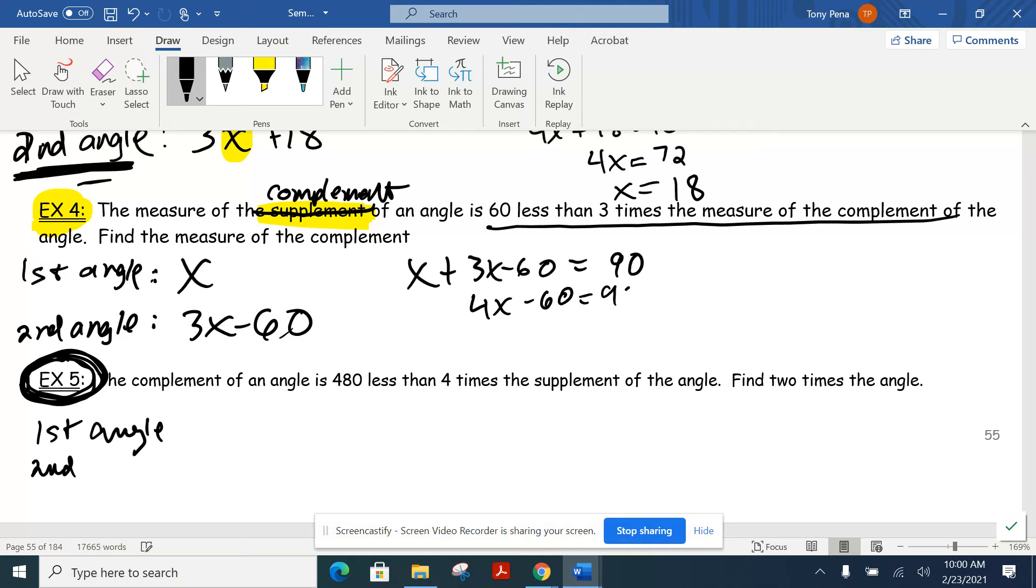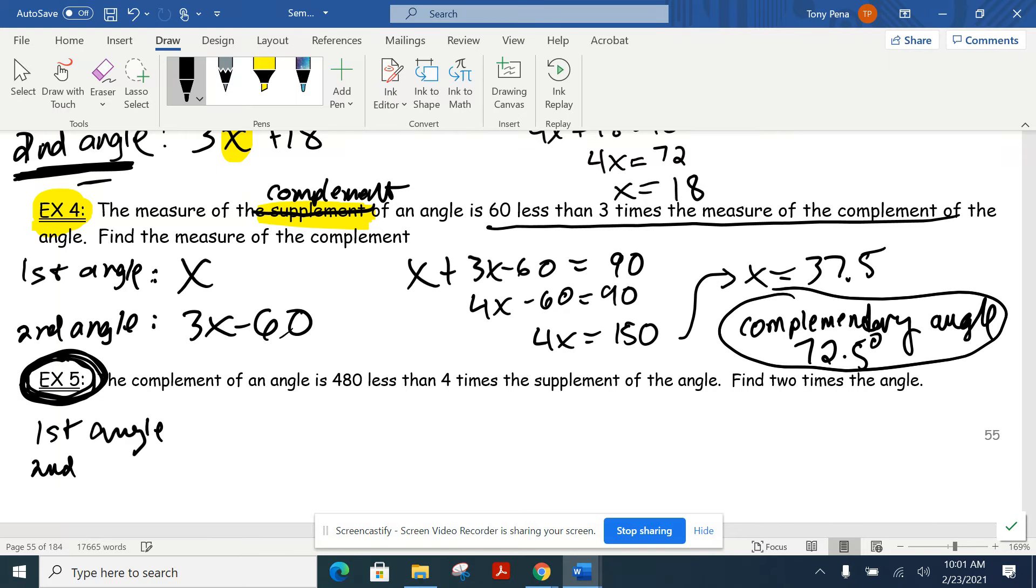Since we're looking for complements, we're going to add those. Set that equal to our 90 degrees. And then we just work our way through solving that. All right. Combine the like terms. Add that 60 over. So, we get 150. Divide by 4. That's what Cam was asking about. You don't like the fractions. But if we did that, we usually get 150 divided by 4. 37.5. And then our complementary angle. I'm going to do that myself. Just make sure. Yeah. 52.5. Is 72.5. All right. And then that's the guy that we want.